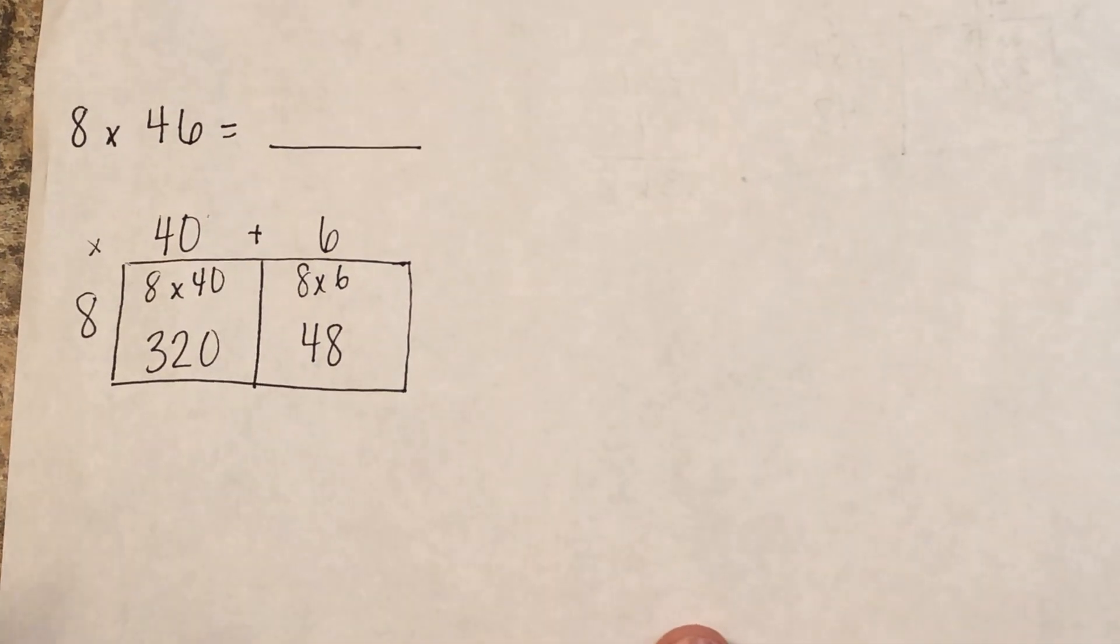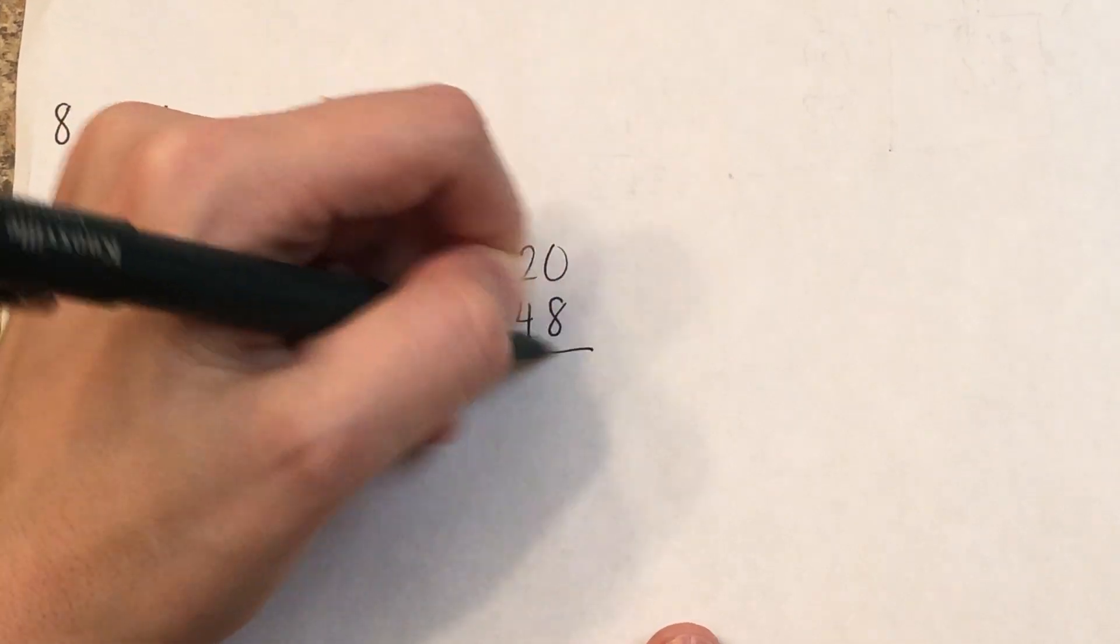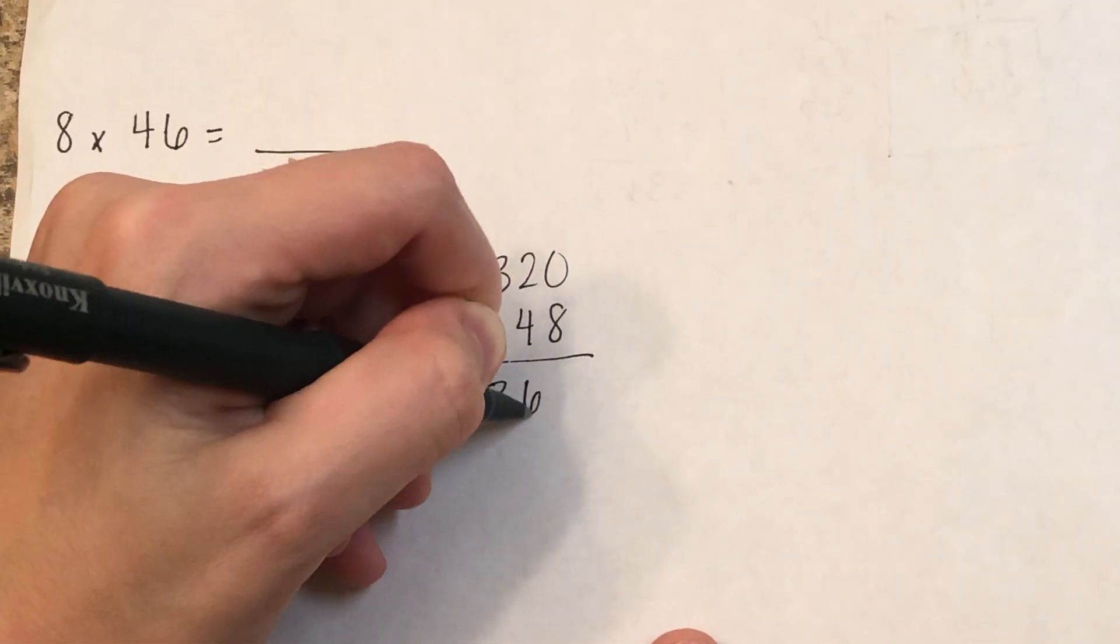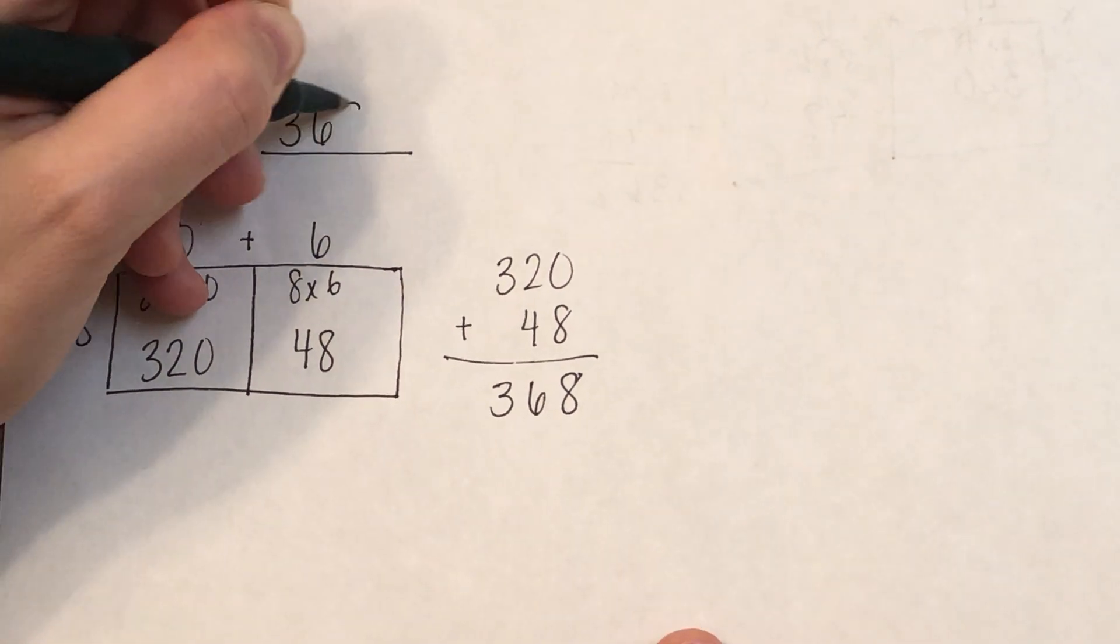Then all you have to do is add those two numbers together, 320 plus 48, and you get 368. So 8 times 46 equals 368.